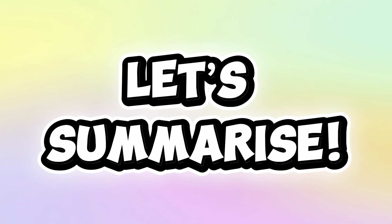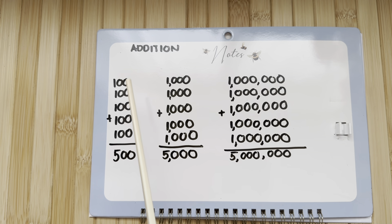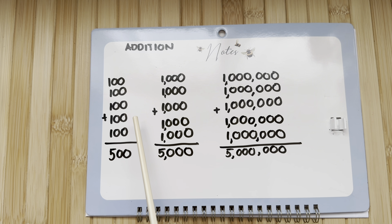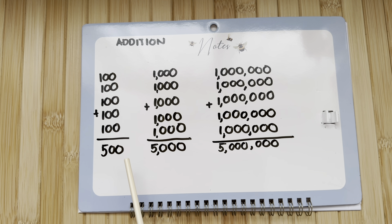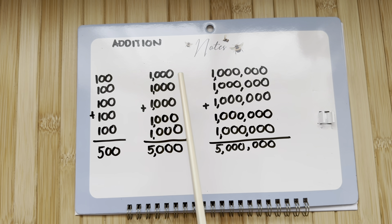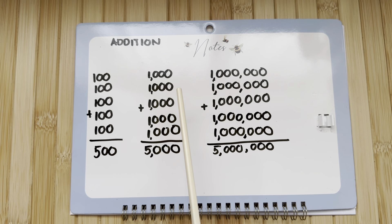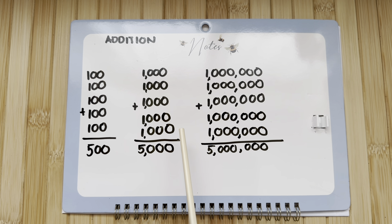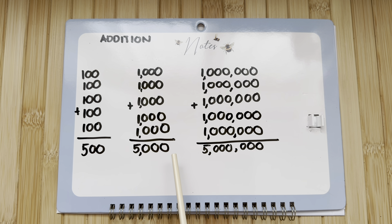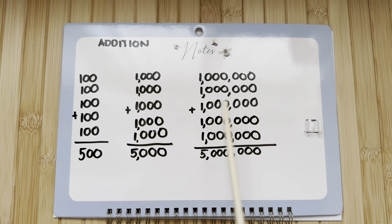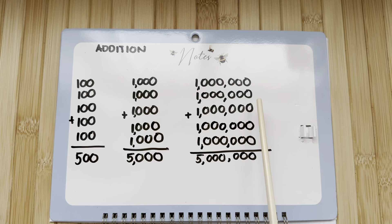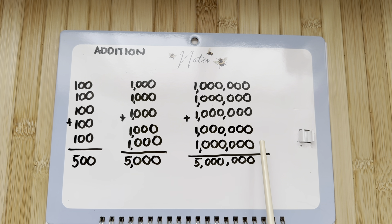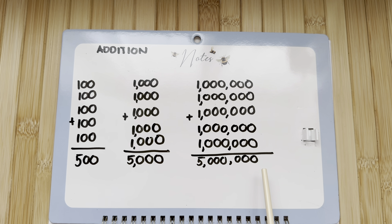Now, let's summarize. Let's learn addition. 100 plus 100 plus 100 plus 100 plus 100 is equals to 500. 1,000 plus 1,000 plus 1,000 plus 1,000 plus another 1,000 is equals to 5,000. And lastly, 1,000,000 plus 1,000,000 plus 1,000,000 plus 1,000,000 plus 1,000,000 is equals to 5,000,000.